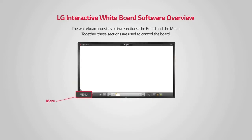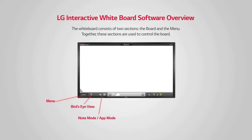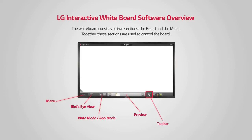The menu contains many different functions. The menu button allows you to access various configurations. For example, bird's eye view allows you to see the whole page that you are working on. The note mode or app mode function allows you to switch between note mode and app modes. Preview mode shows thumbnail images of all the working pages. You can also use the toolbar, zoom in or out, and full screen or split screen functions to change the configuration of the screen.